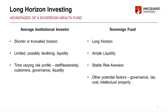If we think about a sovereign fund — the one I used to work for in New Zealand was designed to facilitate universal pensions. Our fund was not paying out anything for about 25-30 years, and the fund would not peak until 2080. So we had no redemptions for at least 20 years and wouldn't peak for another 60-plus years. That put us in a unique position — we could definitely say we had a long horizon. The government couldn't take money away from us; that was in statute. So we had very ample liquidity and a stable risk aversion, meaning we could ride out the cycle.